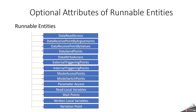We also have some optional attributes for configuring a runnable entity, which we decide based on our requirement. For example, runnable entities can have: data read access, data receive point by arguments, data receive point by values, data send points, data write access, external triggering points, internal triggering points, mode access points, mode switch point, parameter access, read local variables, wait points, written local variables, and variation point. These are not mandatory — based on your requirement and need, you can choose. In our previous video, we used many of these things under runnable entity, so from there you will come to know what parameters or attributes you should choose when designing a runnable entity.